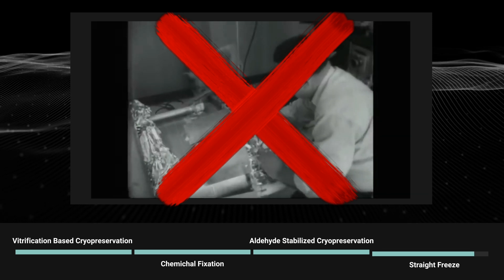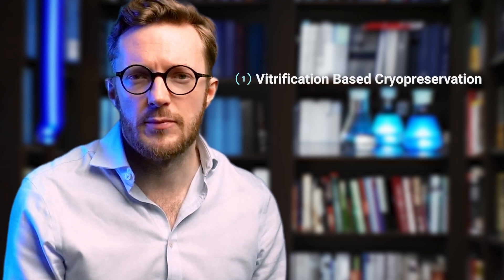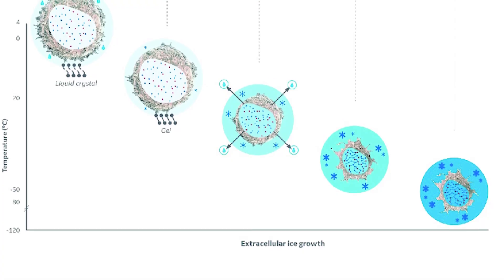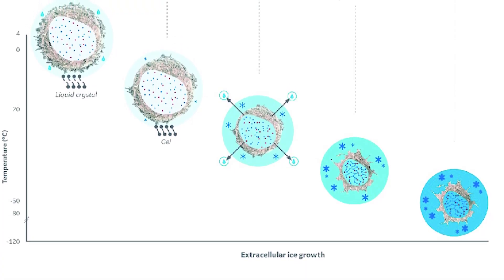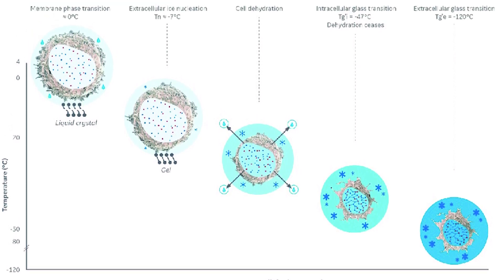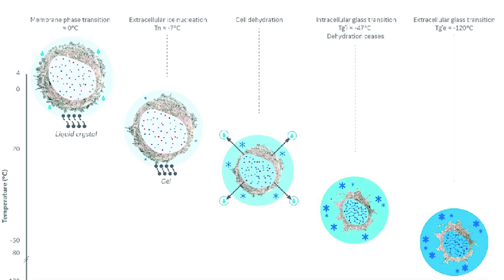We're going to focus on the three main types of preservation techniques, starting with vitrification-based preservation, which is what most people who are cryopreserved today have been preserved with. You use a cryoprotective agent that is a glass-forming formula, and when you cool down the body or brain to cryogenic temperatures, you cross the glass transition temperature, at which point the tissue enters a glass-like amorphous, or vitrified, state.